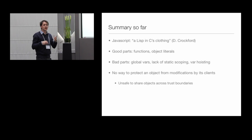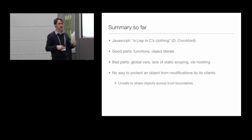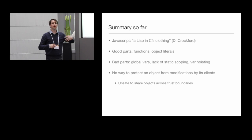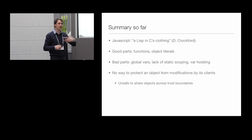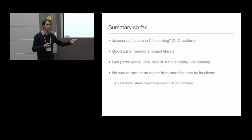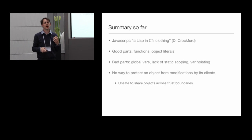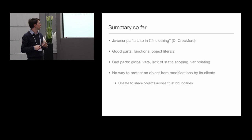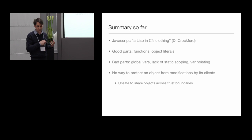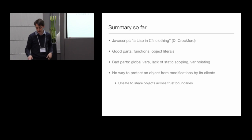Another thing worth mentioning: there is no way to protect objects from modifications by clients in JavaScript. If I declare an object meant to be some API and pass it to a third-party library I don't trust, I have no way of protecting my objects — it can delete all properties or override them with malicious ones. There's no way to safely share objects across trust boundaries. ECMAScript 5 addresses this — we'll talk about that now.